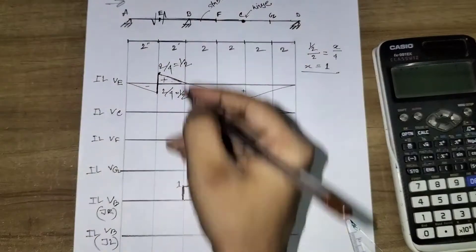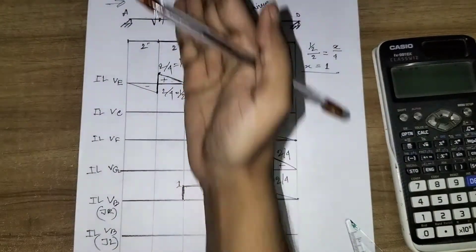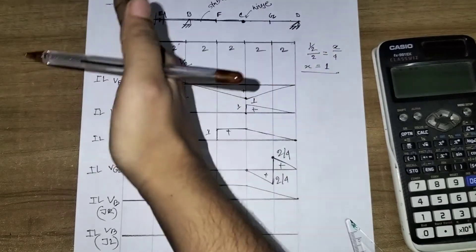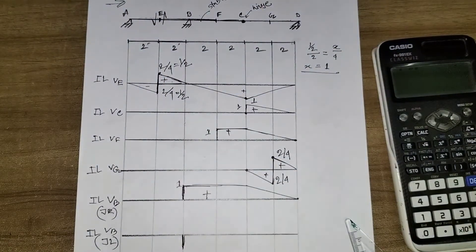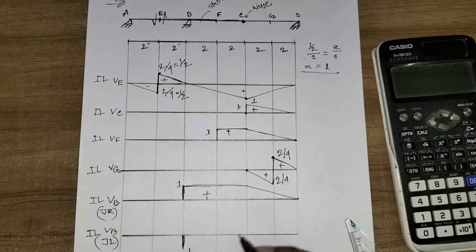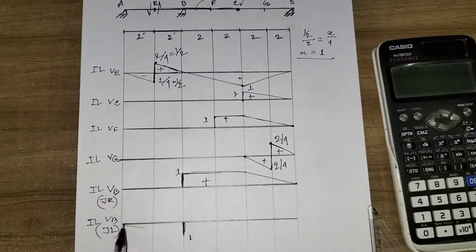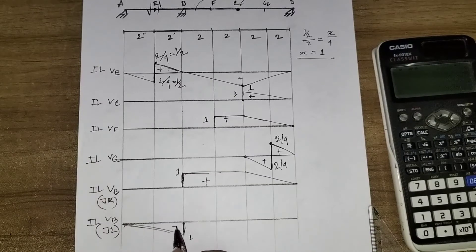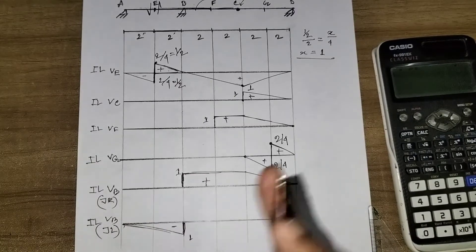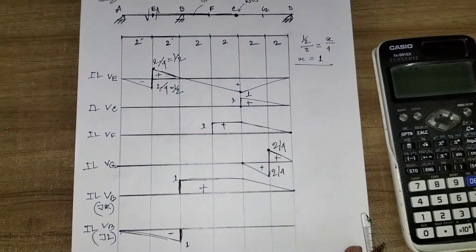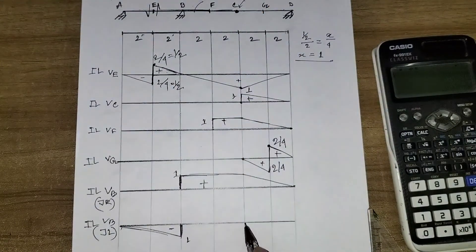the load is on this side of the support, so it will go downward one unit, then back to the support.